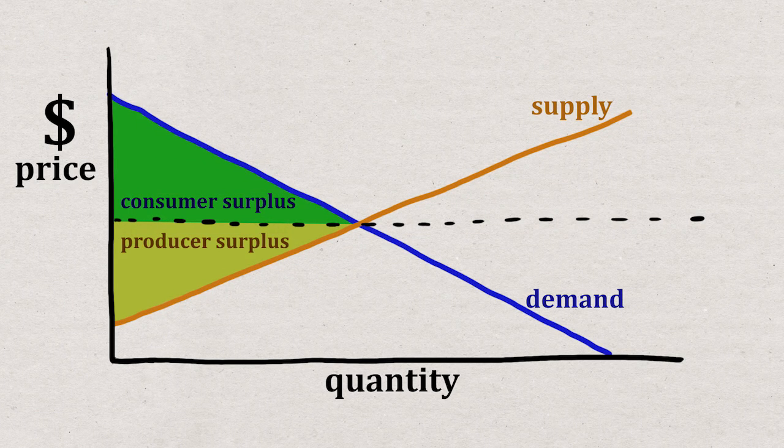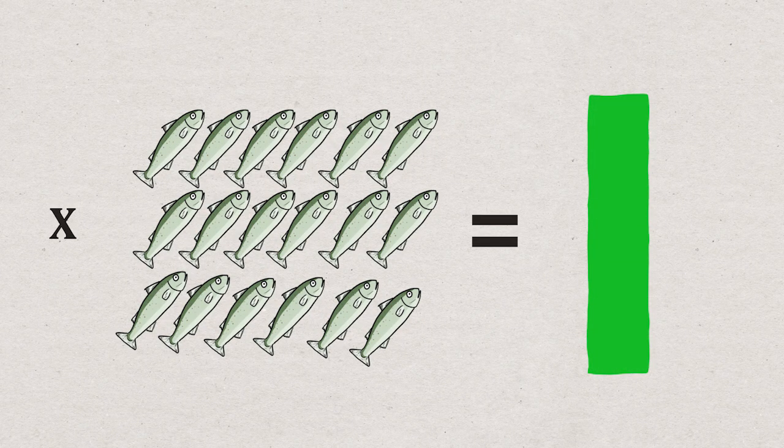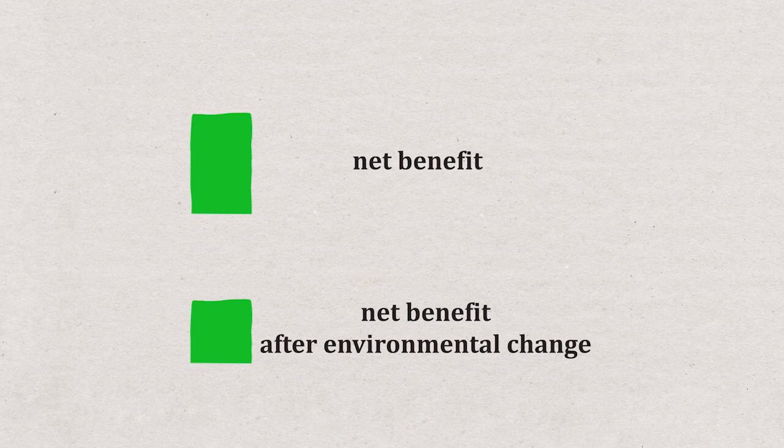When analysts don't have time or money or data to estimate the shape of the demand curve, it's common to just multiply the price by the quantity, which would give an estimate of the total value of fish produced. Then from that they subtract the production costs, and it gives the net benefit of the fishery. And they just see how this number changes with an environmental change.